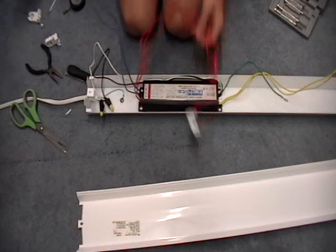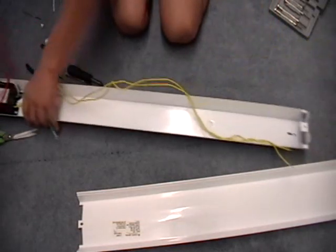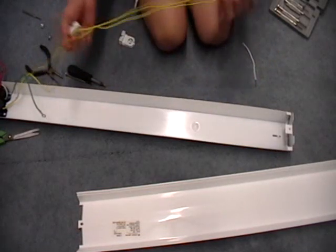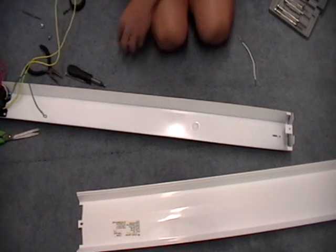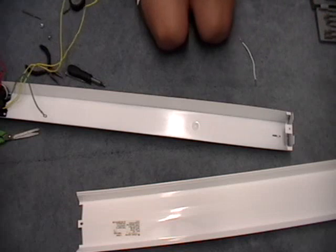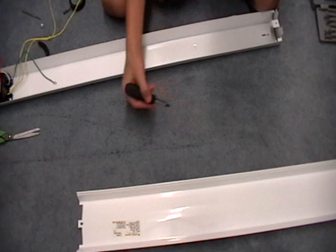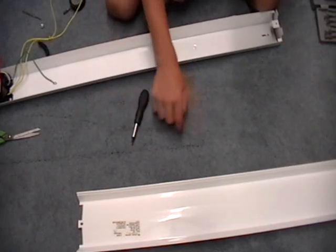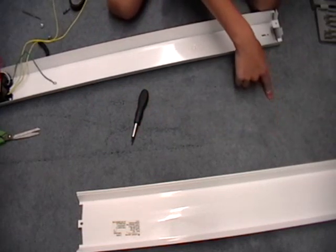Now the other side of the fixture. You got the two yellow wires. You're going to take one, and on the ballast it says to have the clips like this. So you're going to have the ballast here. You're going to have the two wires going this way, clip here and clip here.